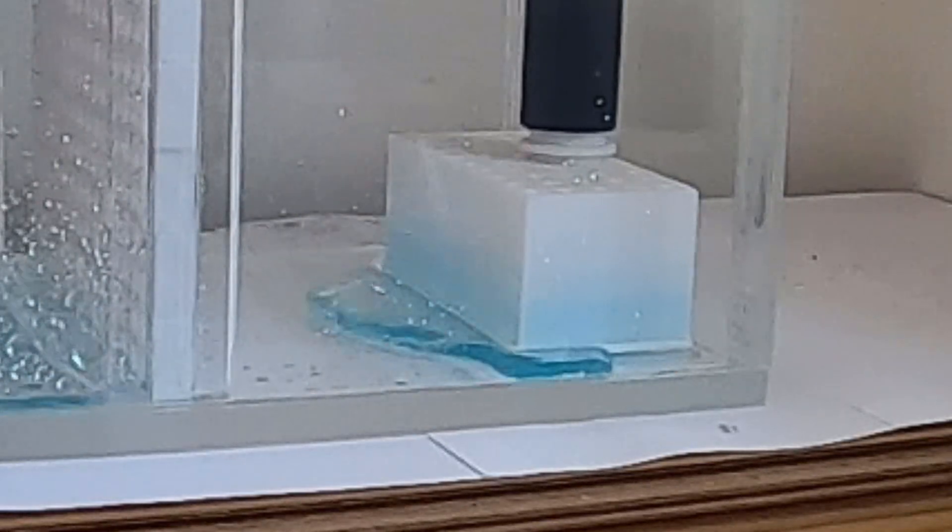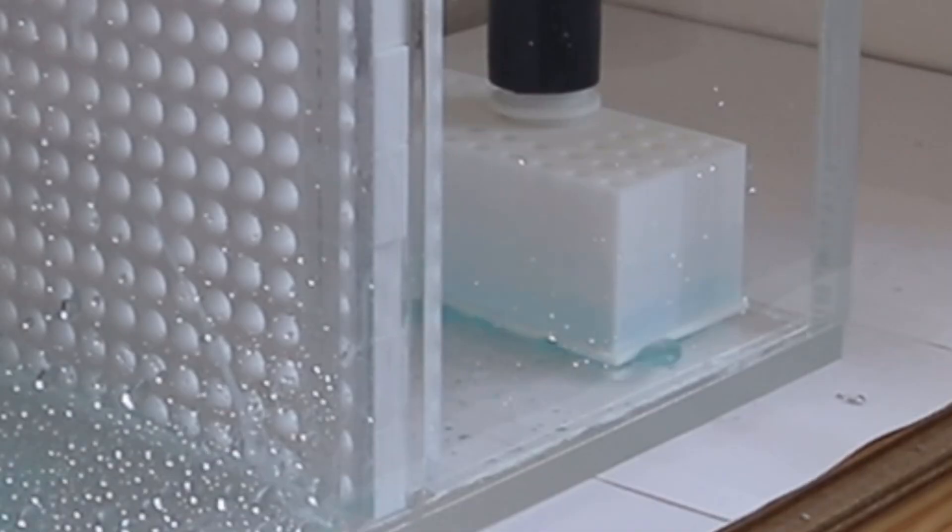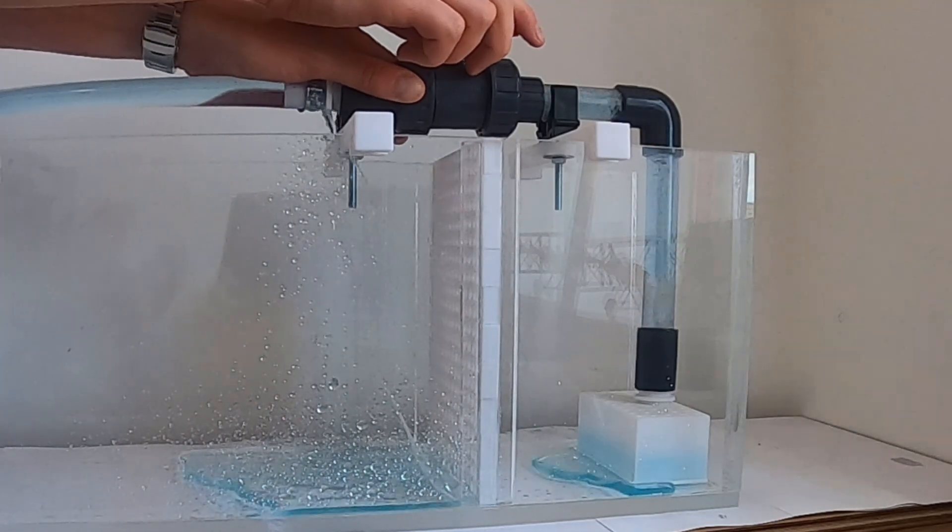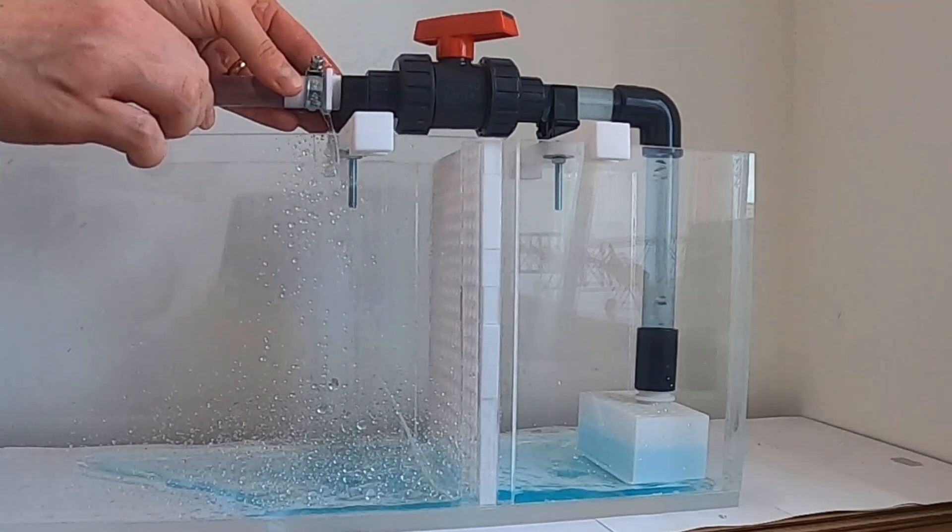The other issue is that water is leaking out of the inlet at the base, so this needs a bit of a modification. I was considering redesigning the whole inlet, but this is nothing a bit of high viscosity superglue can't fix.